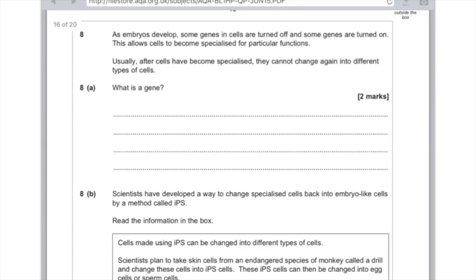As embryos develop, some genes in cells are turned off and some genes are turned on. This allows cells to become specialized for particular functions. Usually after cells have become specialized, they cannot change again into different types of cells. Question 8a: What is a gene? This is a definition you just need to learn off by heart. It's a section of DNA which codes for a particular protein.